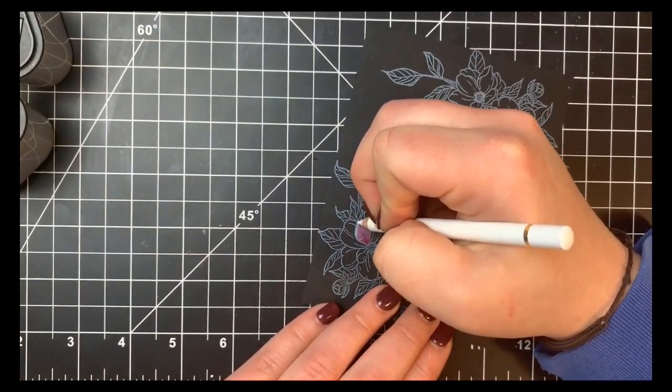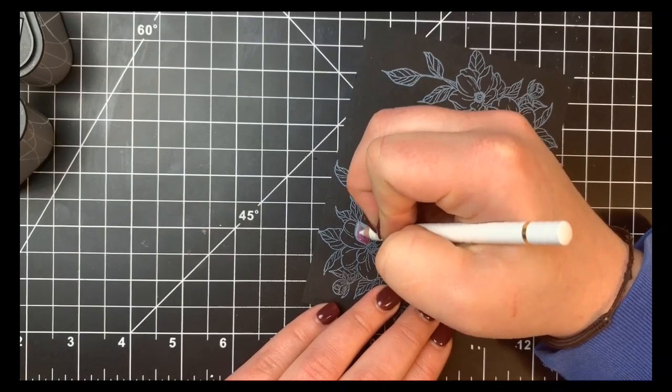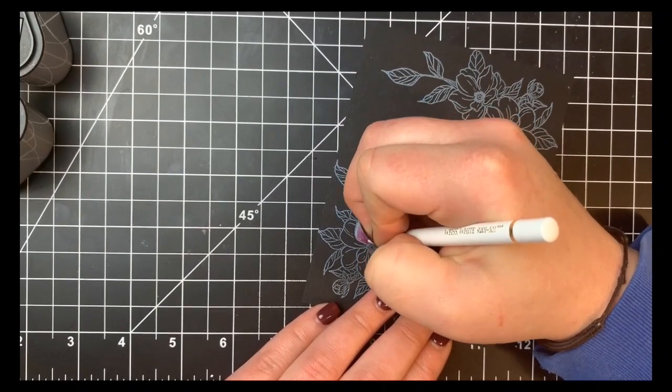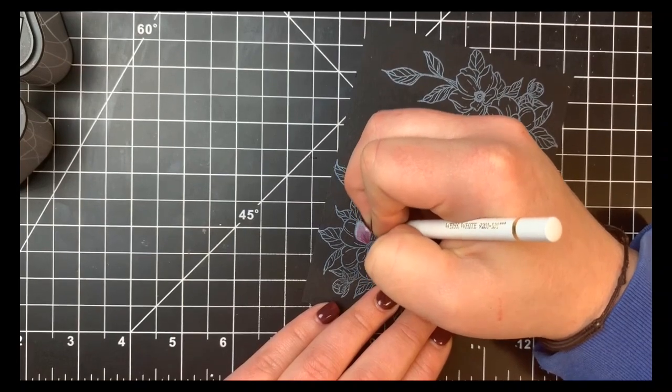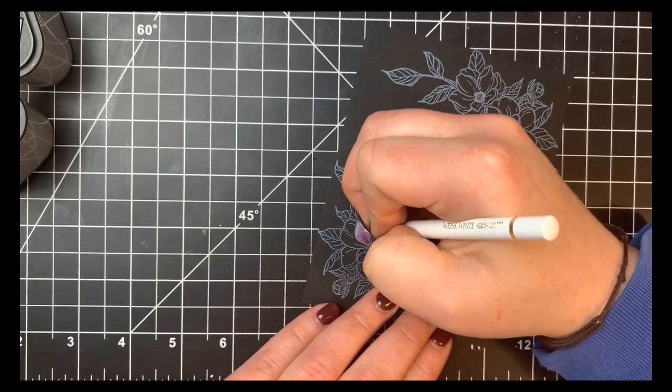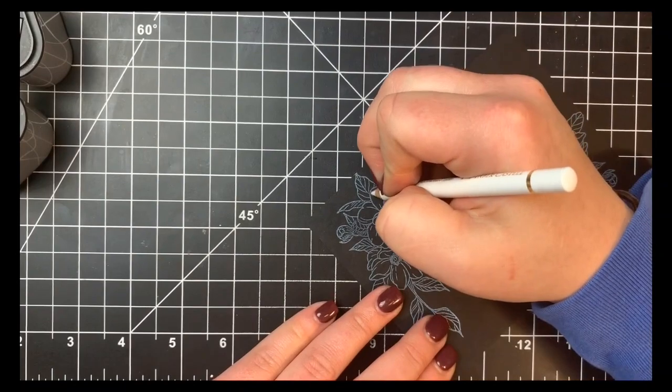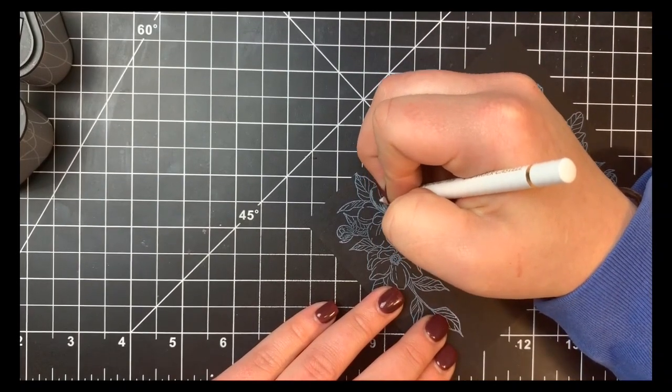So once I get to my lightest color I'm just going to go over that entire petal with that white pencil again, going right over the areas that I've already colored and then fill in that highlight which in this case is the tip of the petal.